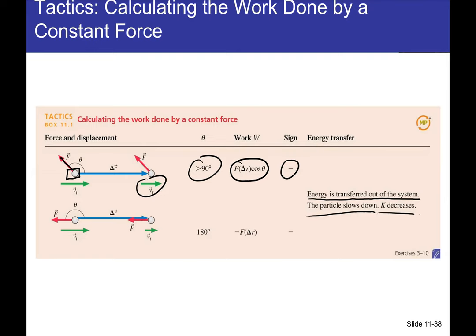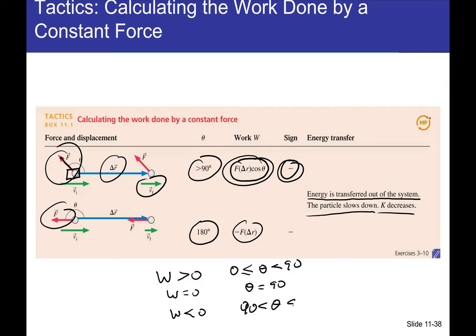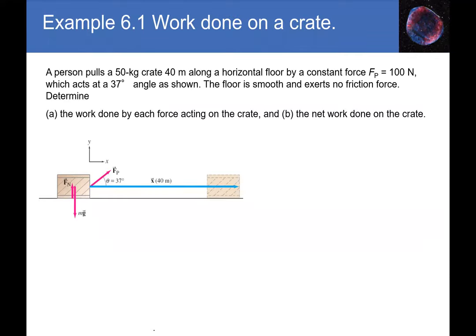To summarize: work done is positive when 0° ≤ θ < 90°, zero when θ = 90°, and negative when 90° < θ ≤ 180°. Make sure you understand these conditions clearly.